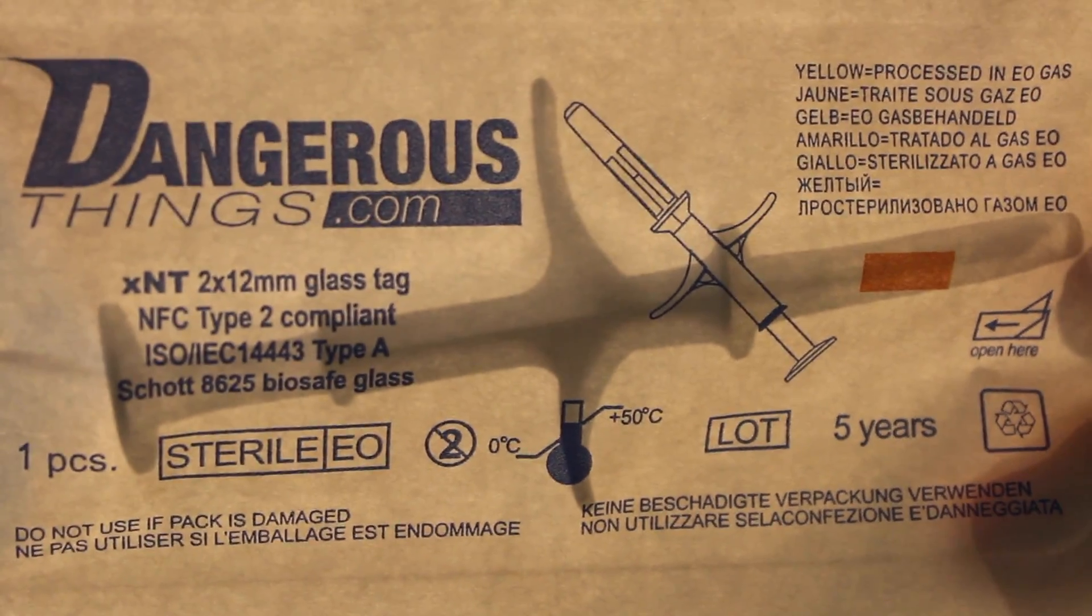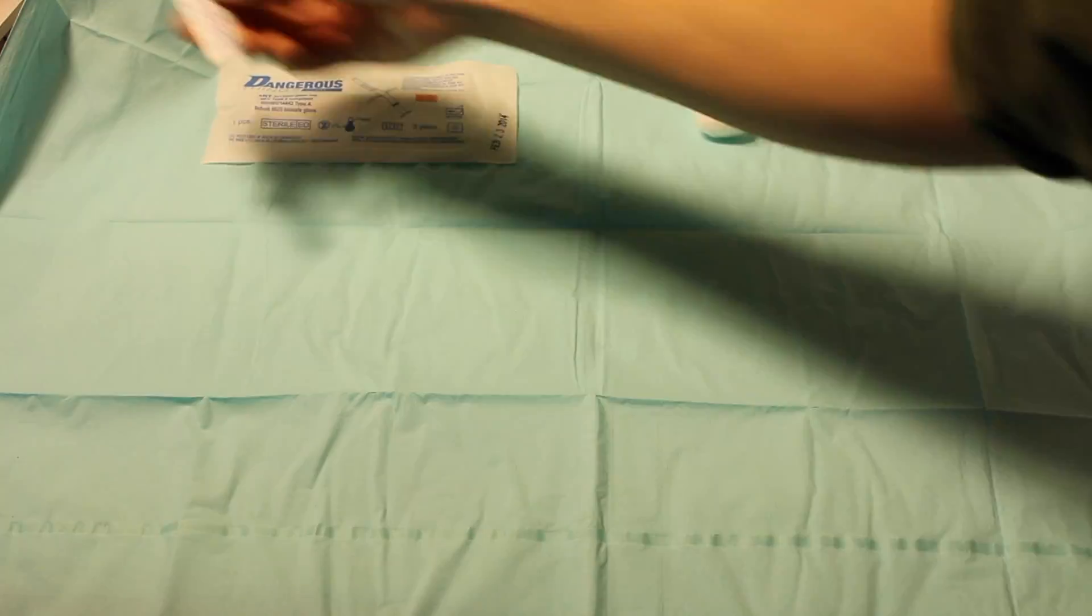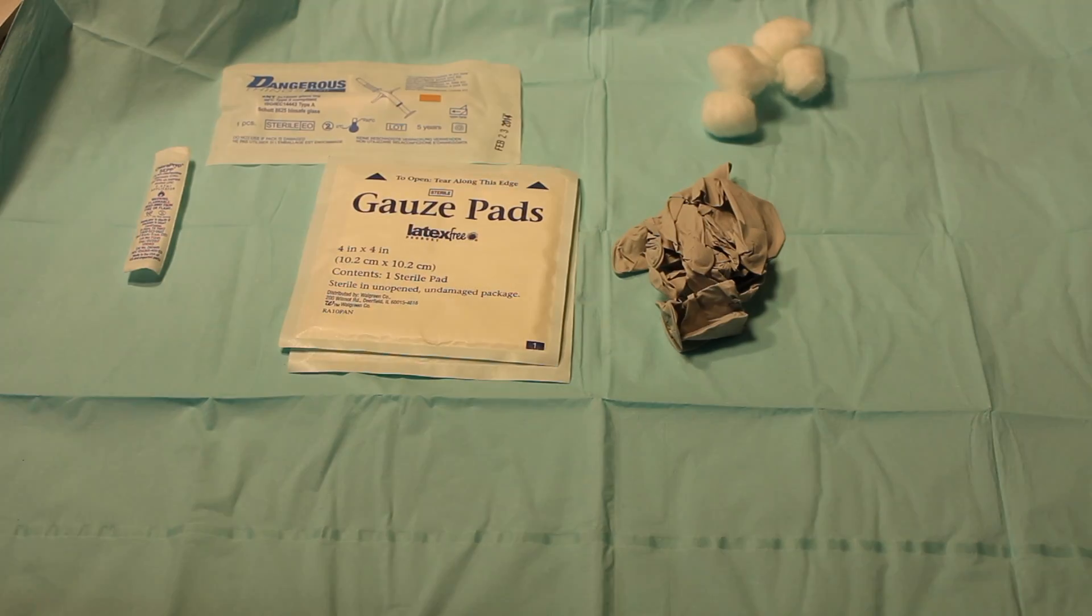Some rubber gloves, sanitary drapes, and last but not least the actual NFC tag and injector. This is the one I bought online. So the first thing I did was lay down the drapes, create a nice sanitary area. Also make sure that your work area is well lit because you don't want to be in the dark. If you're doing this alone, it's definitely more important to have a well thought out process so that you have everything you need when you need it.